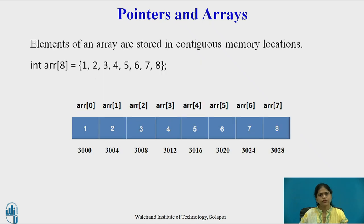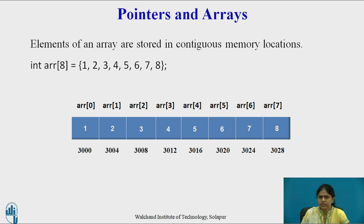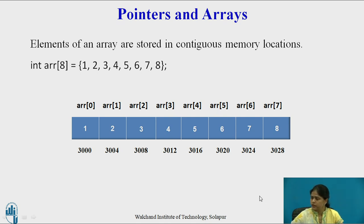In C, the elements of an array are stored in a contiguous memory location. For example, if we have array integer ARR with values 1, 2, 3, 4, 5, 6, 7, 8, this is how the elements are stored inside the array. You can see the first element is at address 3000. Since each integer takes 4 bytes, the next element is at address 3004, then 3008, 3012, and so on — each address is 4 bytes apart.